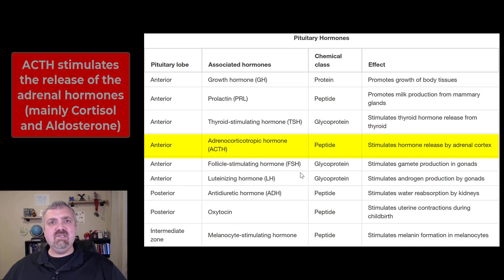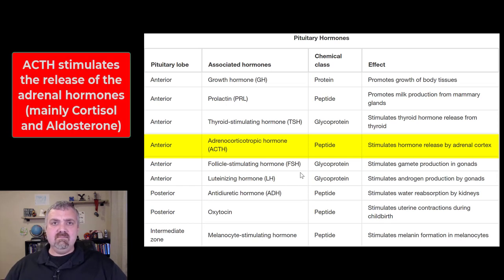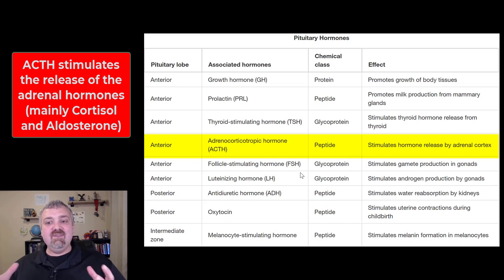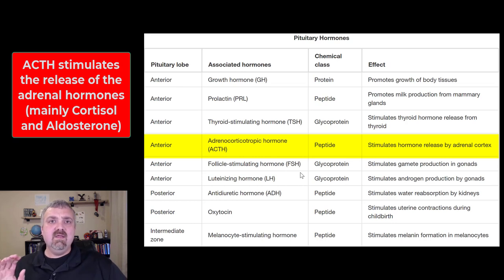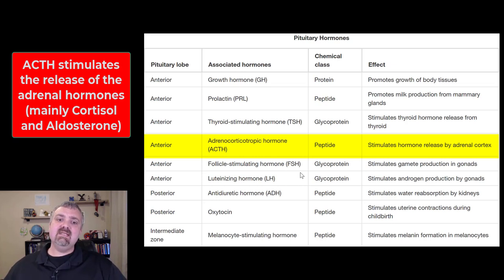ACTH is adrenocorticotropic hormone — a terrible name — but it stimulates the adrenal cortex. The adrenal cortex produces hormones like aldosterone, your stress hormone cortisol, and some androgens. The adrenocorticotropic hormone stimulates the adrenal cortex to release its hormones.